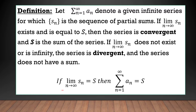In short, if the limit of S_n as n approaches positive infinity is equal to S, then the summation of a_n from n equals 1 to positive infinity is equal to S as well.